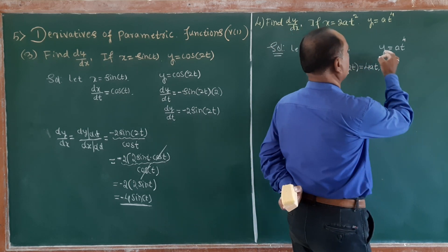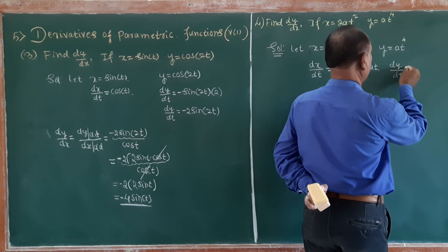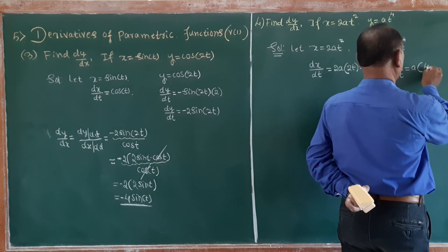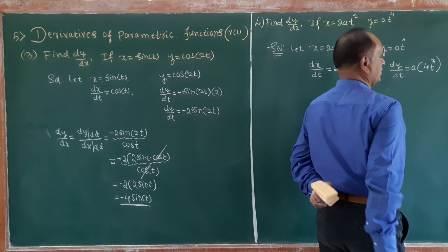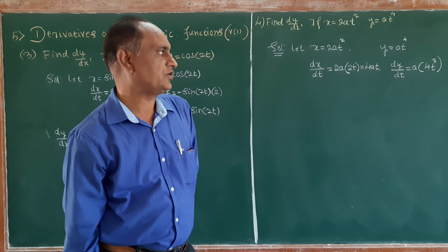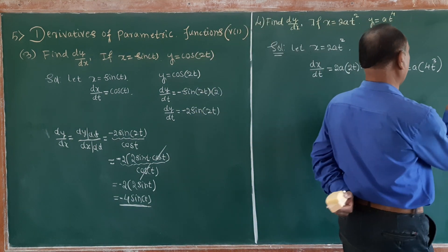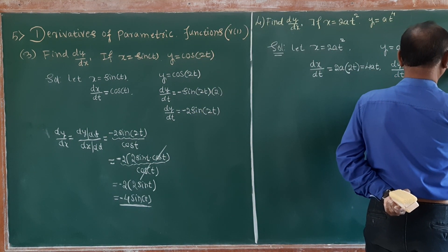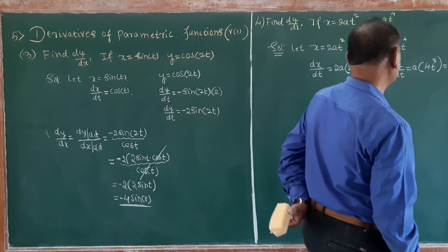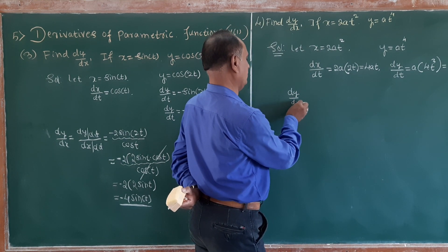t is the parameter. Differentiate with respect to t. dx/dt: derivative of 2at squared with respect to t is 4at. Similarly, dy/dt: derivative of a times t to the 4th power, using the formula x raised to n derivative is n times x raised to n minus 1, gives 4a times t raised to 3.